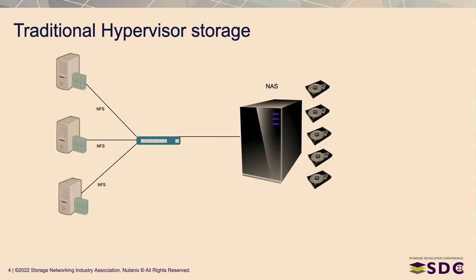Here you see a simplified diagram of a traditional NFS hypervisor storage environment. On the right there's a central NAS device — essentially a big toaster with disks connected to it — could be spinning disks, flash, various combinations, disk shelves, fiber channel. There's an ethernet switch and then three hypervisor hosts running virtual machines and connecting to that storage via NFS.